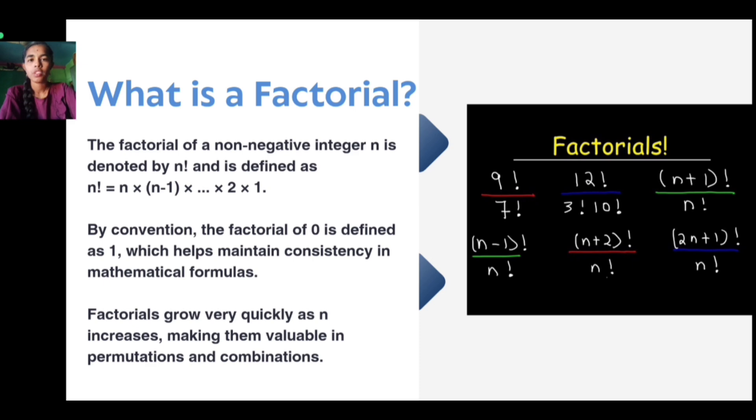Now we will see what is a factorial. The factorial of a non-negative integer n is denoted as n! and is defined as n! = n × (n-1) × (n-2) × ... × 1. By convention, the factorial of 0 is defined as 1.